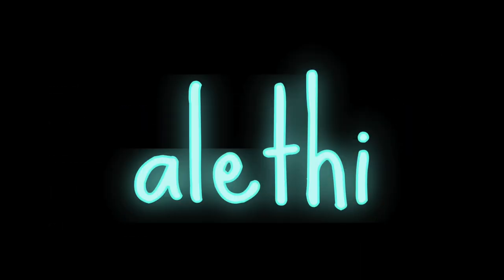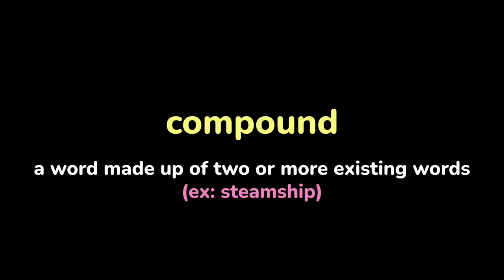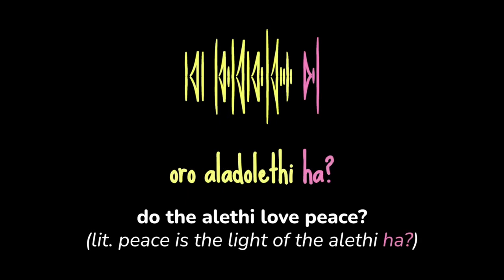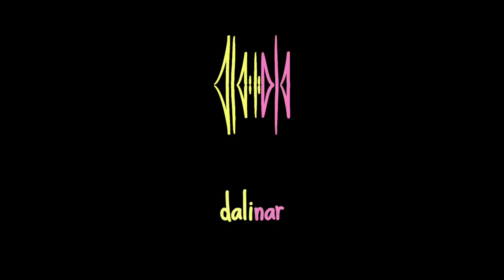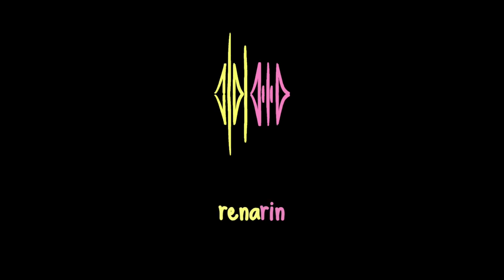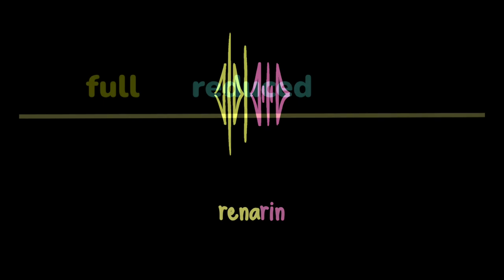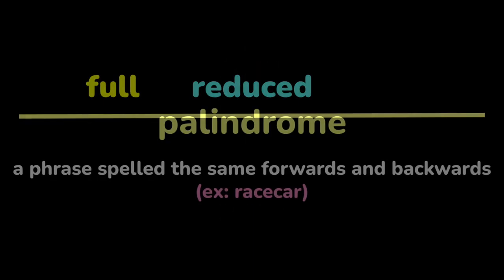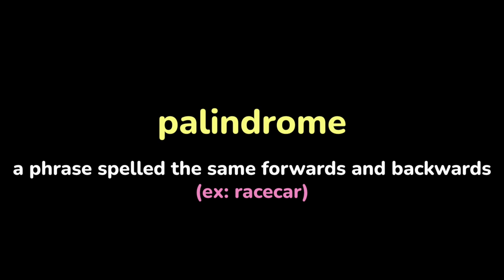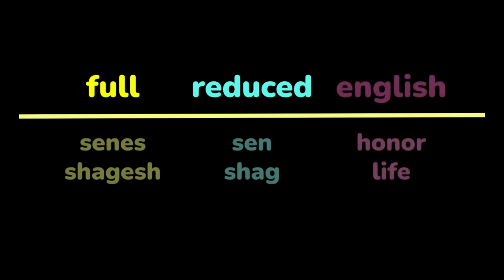The Alethi language really loves compounding as a means of derivation. We know that 'ha' is a sentence-final question marker, and we know that the suffix '-nar' means 'like' and the suffix '-lin' means 'son of', but that these suffixes change depending on the consonant before them — '-lin' becomes '-rin', for example, following 'r'. Each Alethi noun has two forms: a full form, which originally would always be a palindrome but because of sound changes now very often isn't, and a reduced form, which is only used with affixes. For example, the full forms of 'honor' and 'life' are 'senes' and 'sages', and their reduced forms are 'sen' and 'sag'.